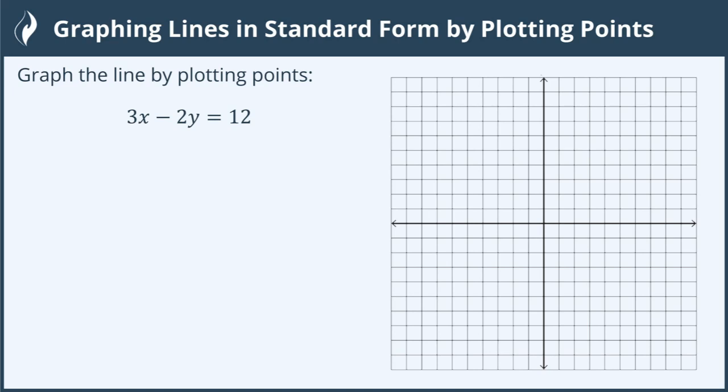We're going to graph this line 3x minus 2y equals 12 on this grid here. In order to graph a line we need at least two points. More is better, but two is the minimum. So let's see if we can find some points.